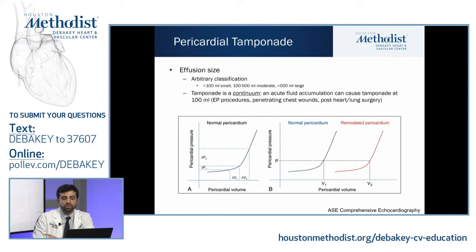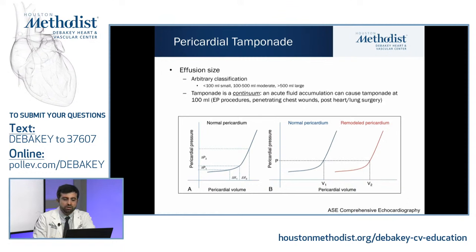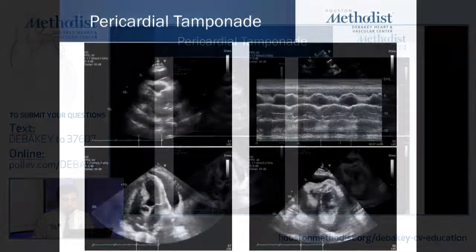It's very important to remember that the amount of effusion is as important as the time the pericardial fluid had to collect. Fluid that collects very rapidly — for example after an EP procedure or post-surgery — even a small amount can result in tamponade, whereas patients with chronic effusions in cancer or hypothyroidism have a pericardium that remodels, shifting the volume-to-pressure curve to the right, where pericardial space pressure may not increase significantly even with large volumes.